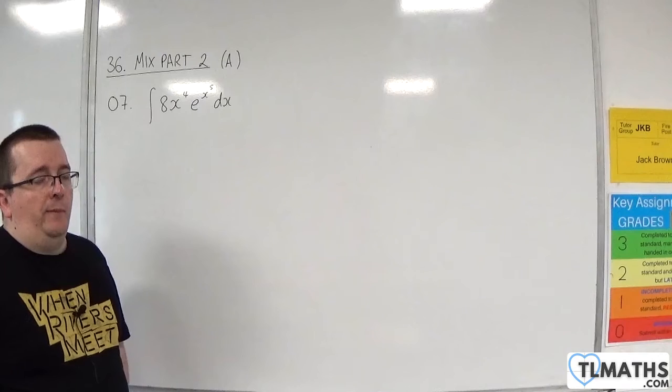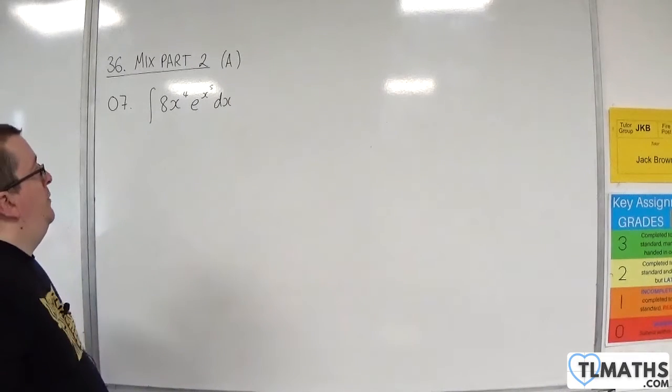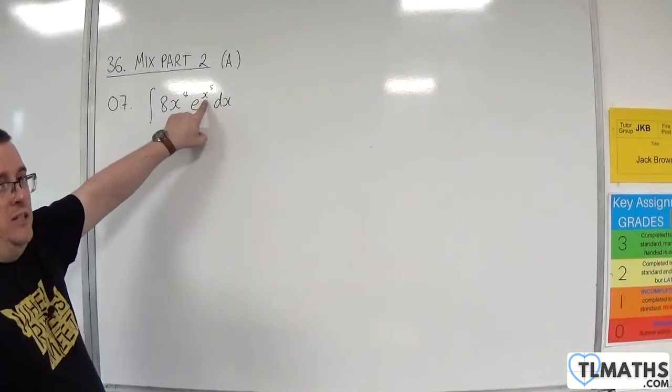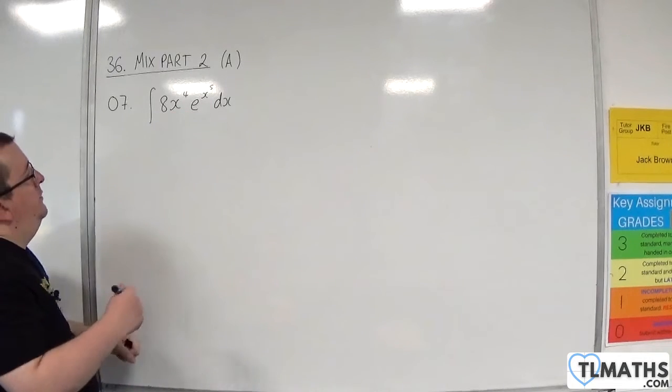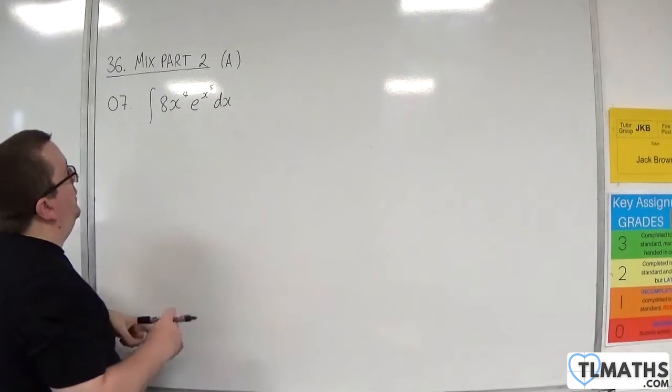Or you can use integration by substitution. The integration by substitution would be using u is equal to x to the 5, if you want to go through it that way. So if you want to do it by reversing the chain rule, that's how I'll do it first.